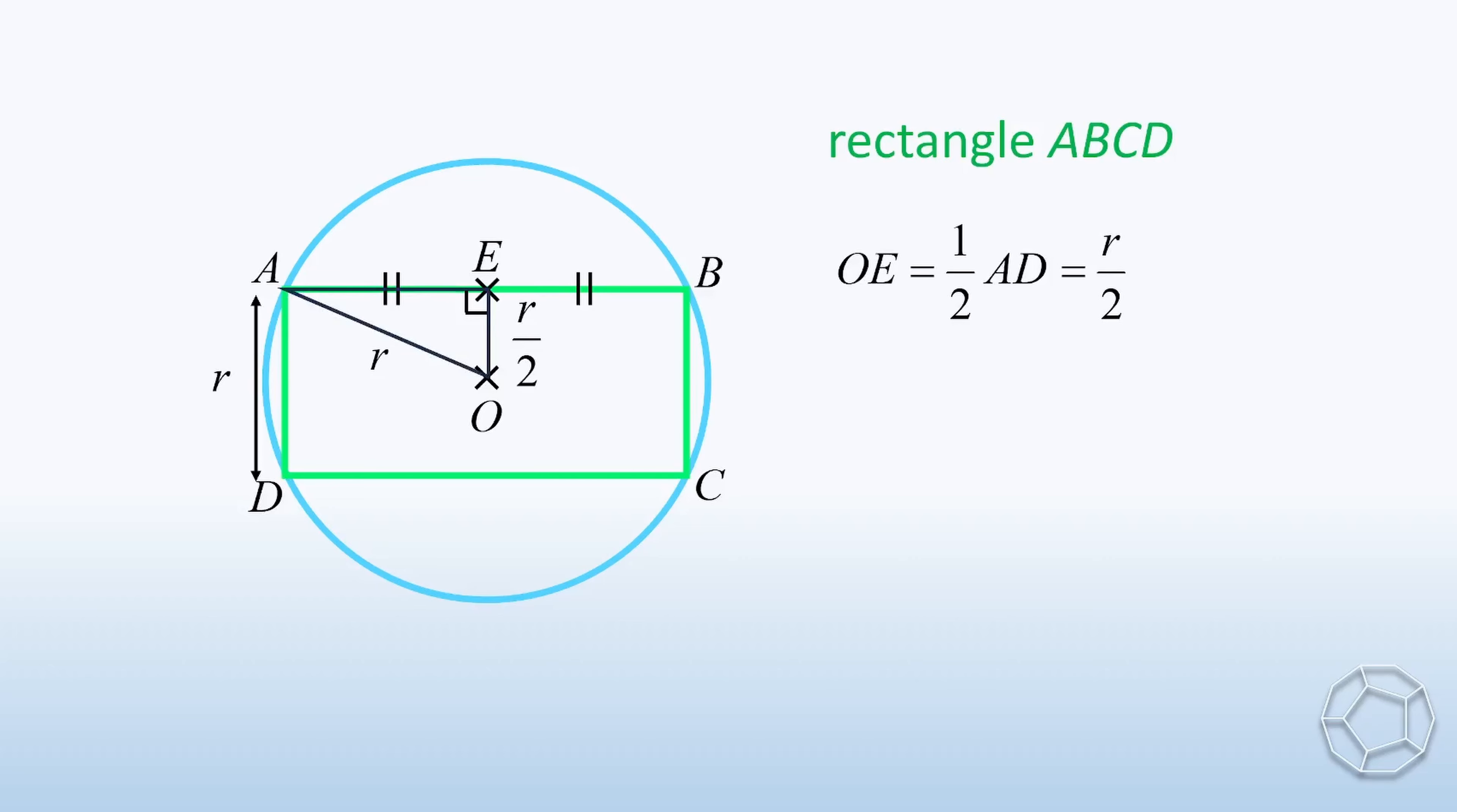Therefore, in the right-angled triangle, we have AE square plus bracket r over 2 whole square is equal to r square, because of Pythagoras theorem. It gives AE square is equal to 3r square over 4. We don't have to take square root here, as you will see in a second.